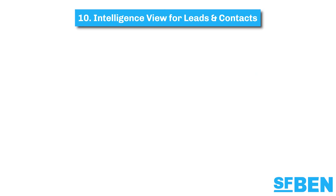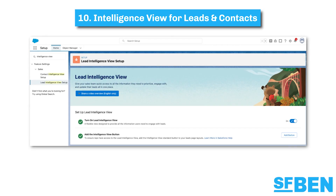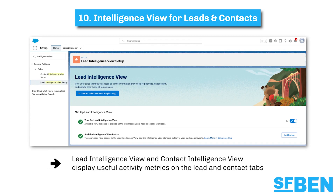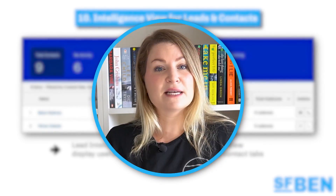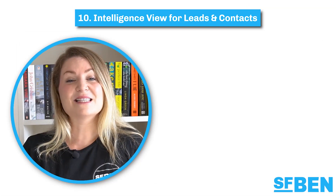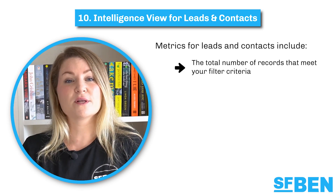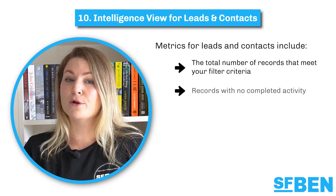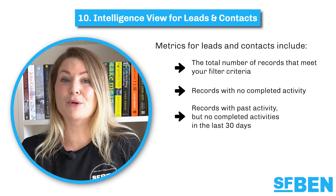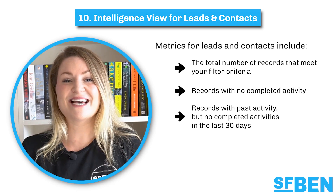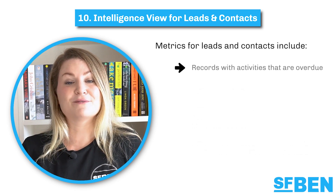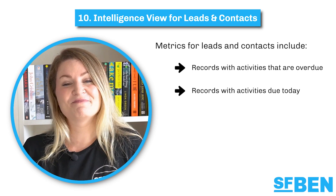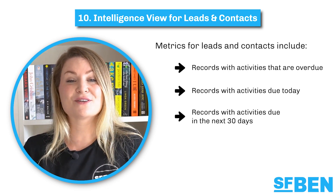Last but not least, at number 10, we have a new intelligence view for leads and contacts. Once enabled via setup, lead intelligence view and contact intelligence view display useful activity metrics on the lead and contact tabs — previously those tabs only displayed list views. These metrics include the total number of records meeting your filter criteria, records with no completed activities, records with past activity but no completed activities in the last 30 days, records with recently completed activity but no future activity scheduled, records with overdue activities, records with activities due today, and records with activities due in the next 30 days.